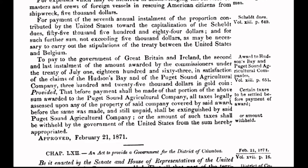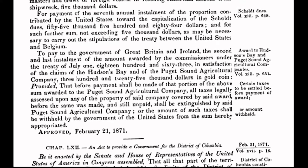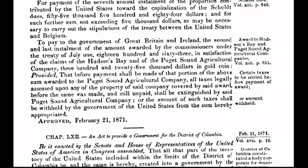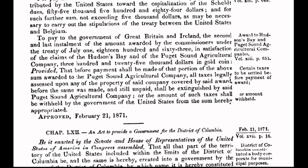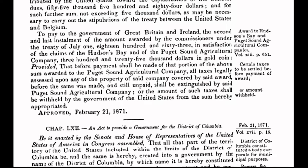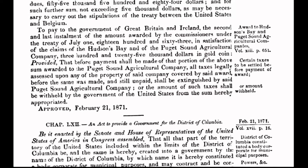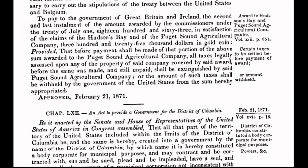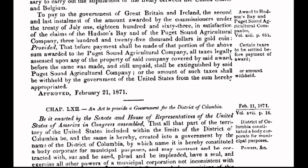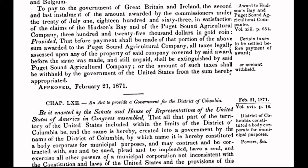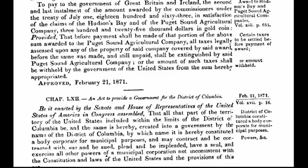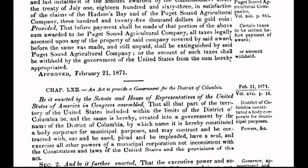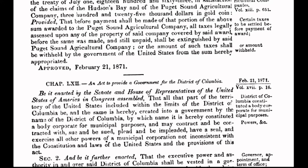With no constitutional authority to do so, Congress creates a separate form of government for the District of Columbia, a 10-mile-square parcel of land. The act was passed when the country was weakened and financially depleted in the aftermath of the Civil War. It was at that time a strategic move by foreign-interest international bankers who were intent upon gaining a stranglehold on the coffers and neck of America. Congress cut a deal with the international bankers, specifically the Rothschilds of London, to incur a debt to said bankers.